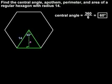Notice that the apothem creates two congruent right triangles, so we know that it bisects the 60 degree central angle, creating two 30 degree angles.